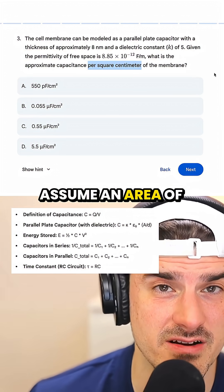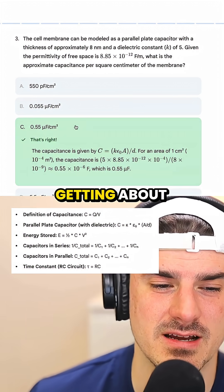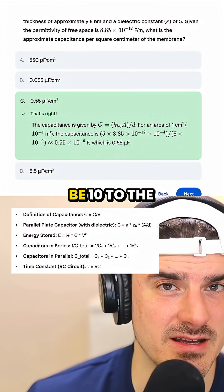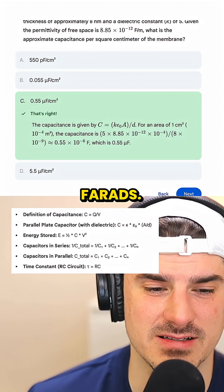This means we can assume an area of one square centimeter. And when we plug the numbers in, we should be getting about 0.55, and this should be 10 to the negative 6 farads.